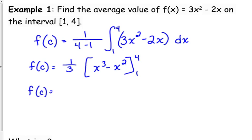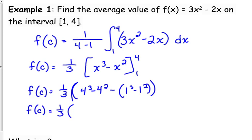Okay, so our average value is equal to 1/3 of x³ minus x² from 1 to 4. So, 1/3, parentheses, 4³ minus 4² minus parentheses, 1³ minus 1².